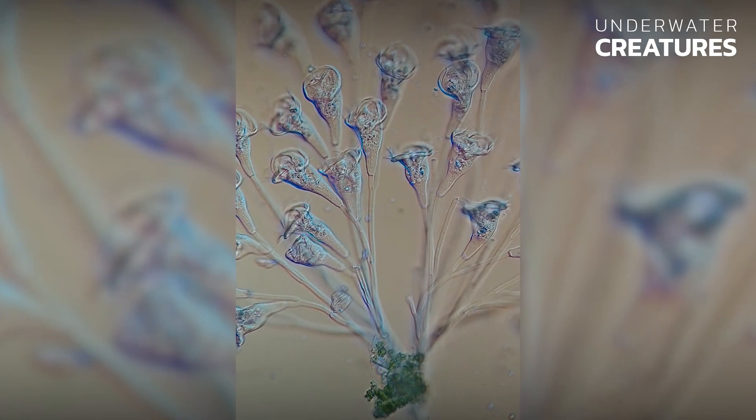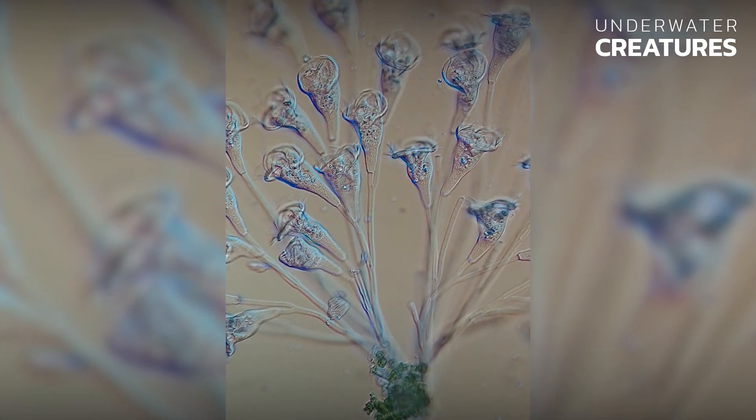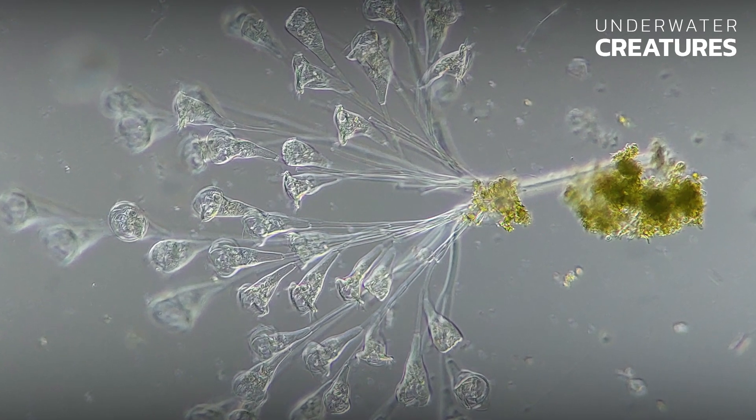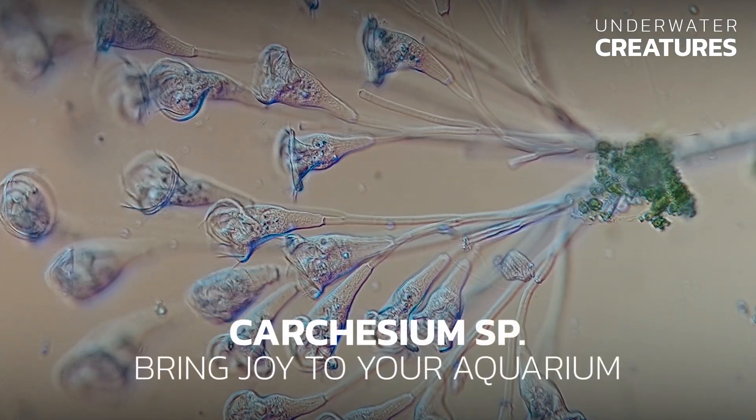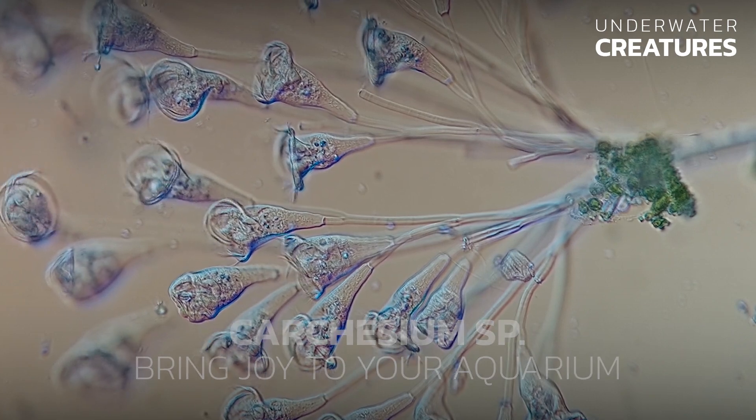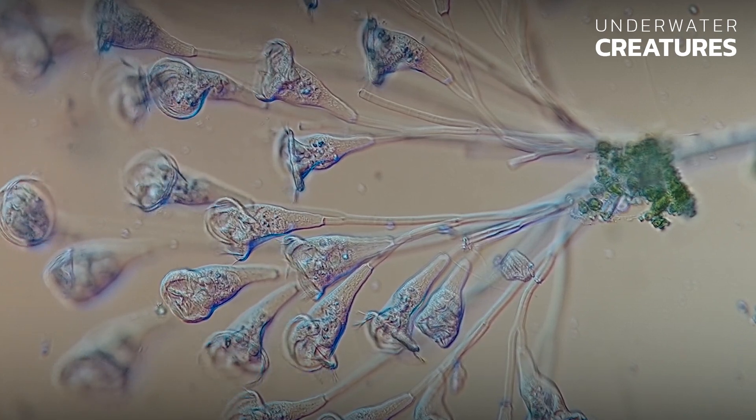Have you ever seen a flower-like creature in your aquarium? Believe it or not, it is there. Let's talk about Carchesium, creatures that look like flowers under the microscope when moving their heads and crown of petals happily in the water.